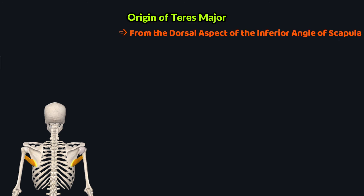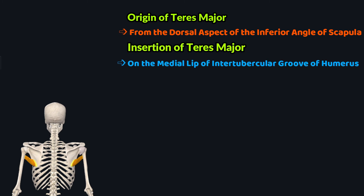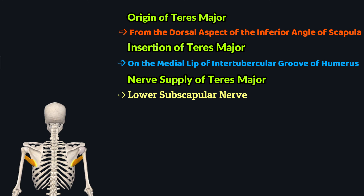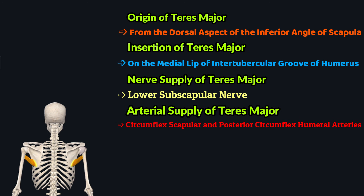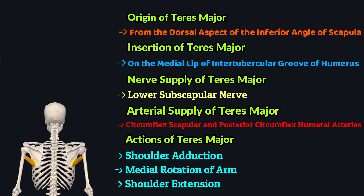To give a quick review: the teres major muscle originates on the dorsal aspect of the inferior angle of the scapula and inserts onto the medial lip of the intertubercular groove of the humerus. Its innervation is the lower subscapular nerve, and its arterial supply comes from the circumflex scapular artery and the posterior circumflex humeral artery. The actions performed by this muscle are shoulder adduction, medial rotation of the arm, and extension and hyperextension of the shoulder at the glenohumeral joint.